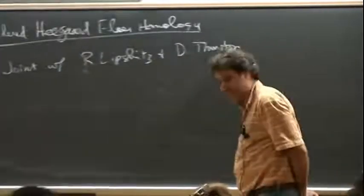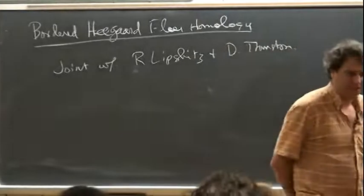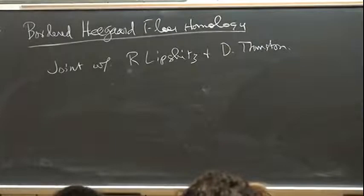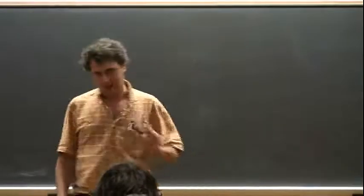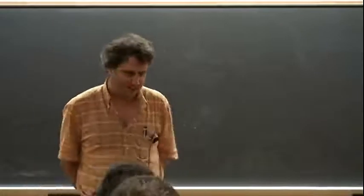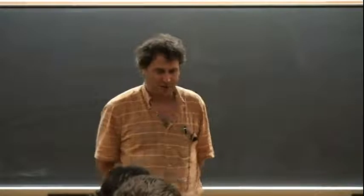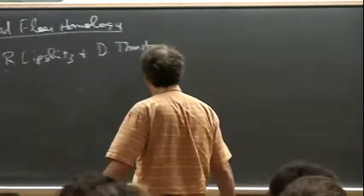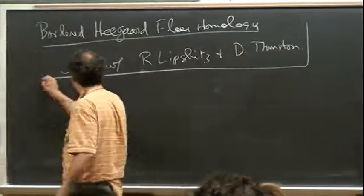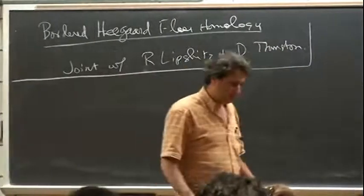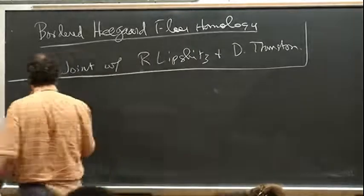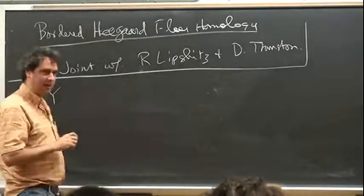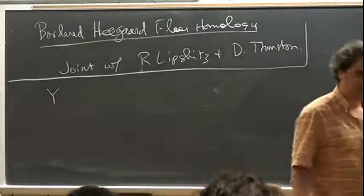I basically have to elaborate on Robert's talk. Robert gave an overview of the package, and I'd like to give some more of the details. I'm going to give a slightly more archaic formulation of the story than what Robert did in his talk, and I'll explain at some point how one can go between the two formulations. So bordered Floer homology is a package for three-manifolds with boundaries, as Robert said. I'd like to reintroduce a piece of the story which Robert suppressed, which are the type A structures.